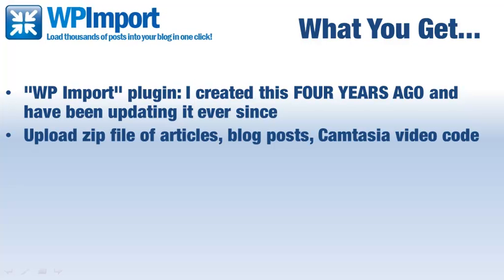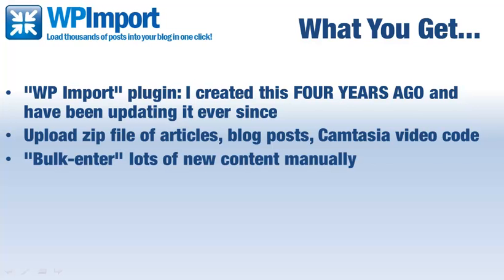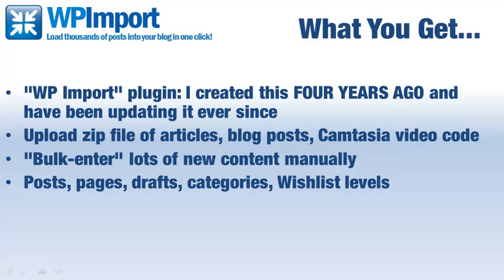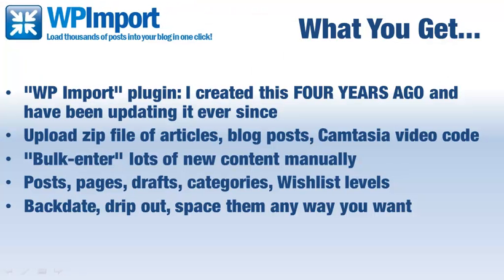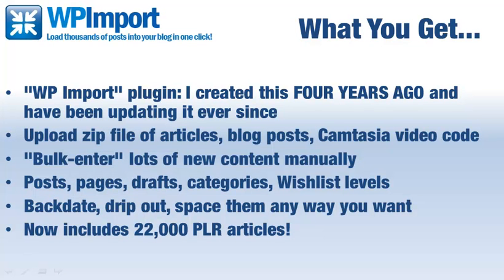You can upload a zip file of articles, blog posts, video code, or anything you want — if it can be in a blog post, you can put it in a zip file and use WP Import to import hundreds, if not thousands, of pieces of content into your blog. You can bulk enter lots of new content manually, upload as posts, pages, drafts, or categories, and even control your membership level if you have WishList Member installed — choosing which members of your site have access to the new content you upload.